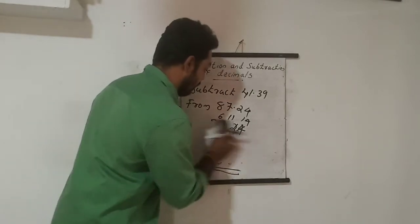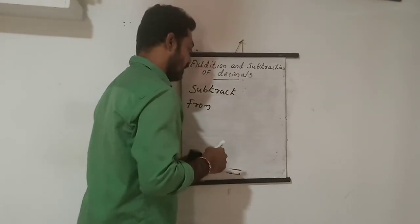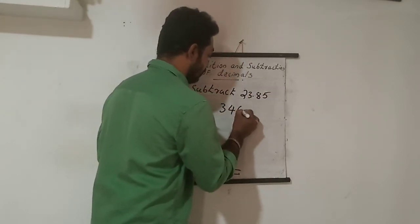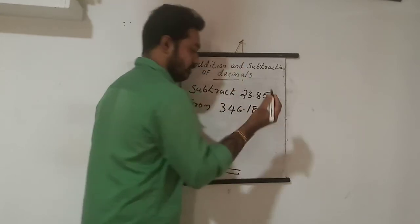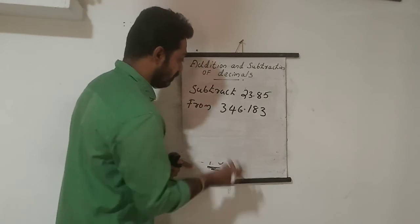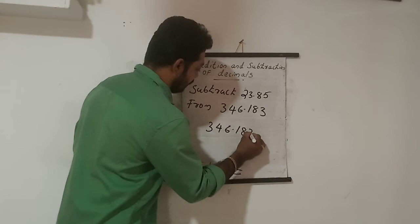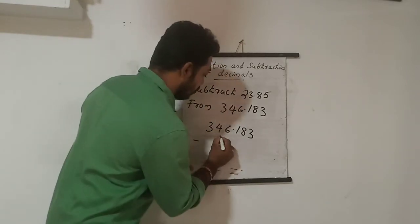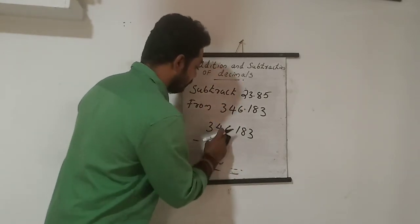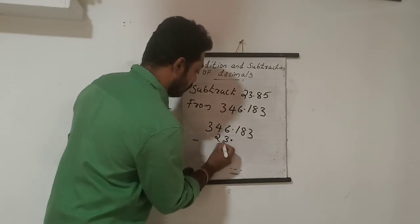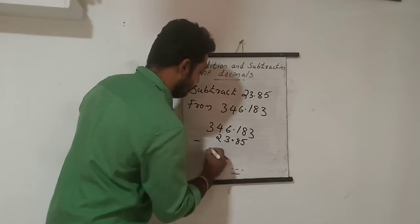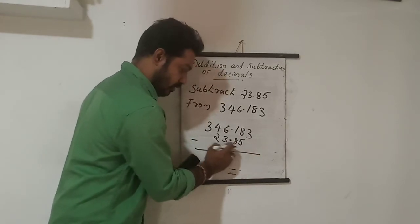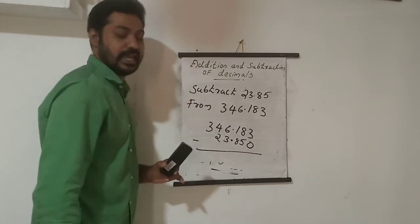One more example: subtract 23.85 from 346.183. Write the bigger number first: 346.183. Then write 23.85 with the decimal points aligned — so 23.85 becomes 023.850. Since there is no digit in the thousandths place for 23.85, we can put a zero there.